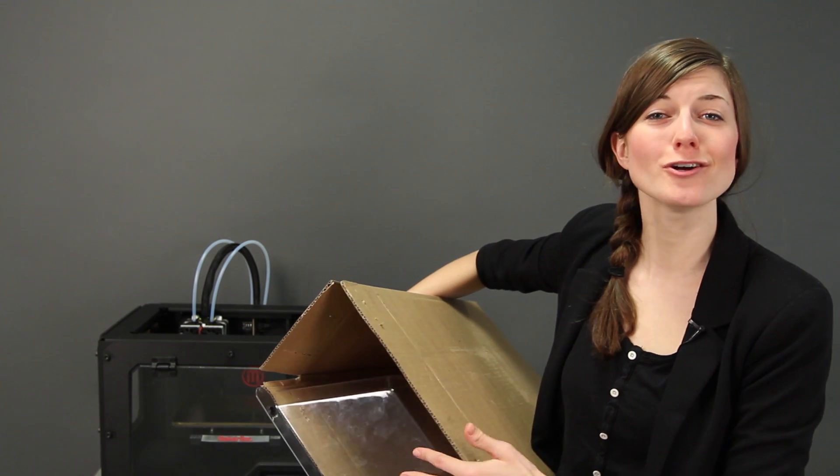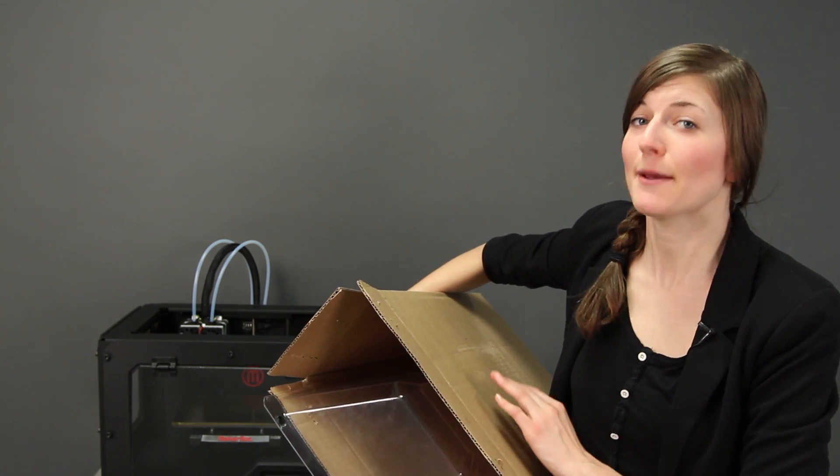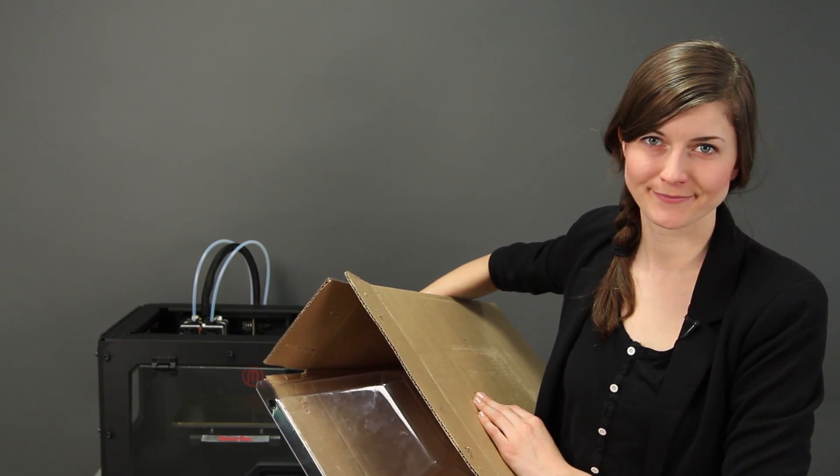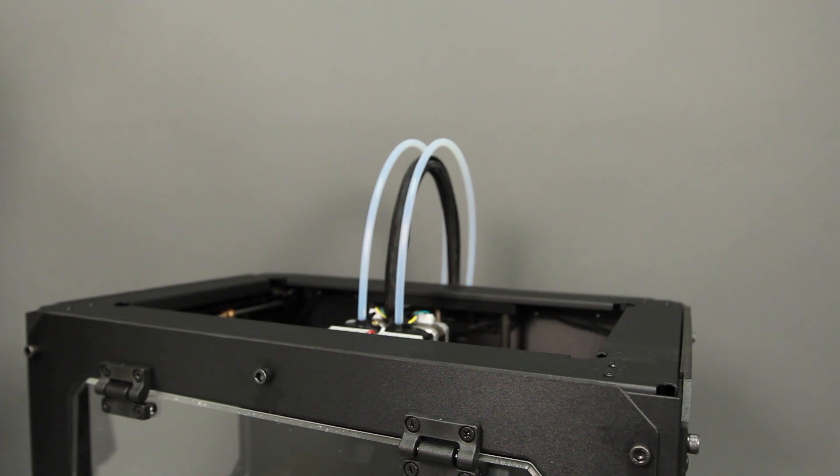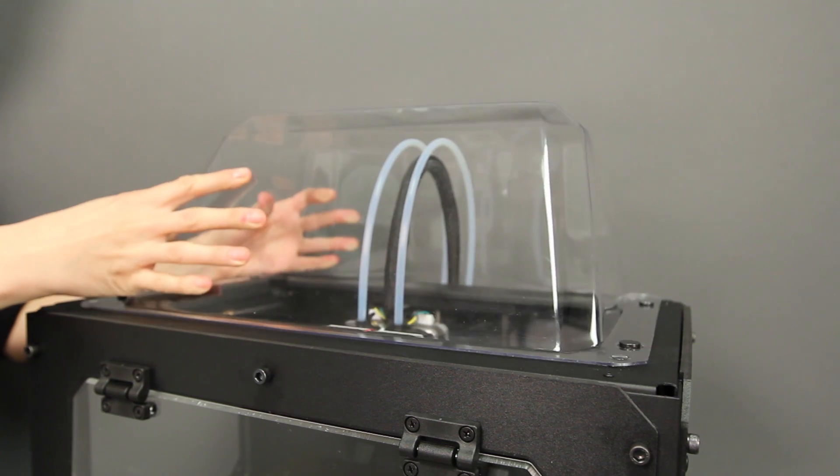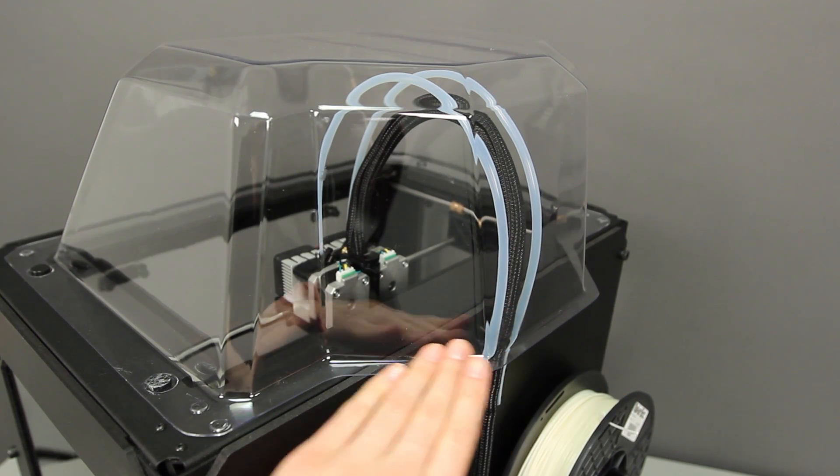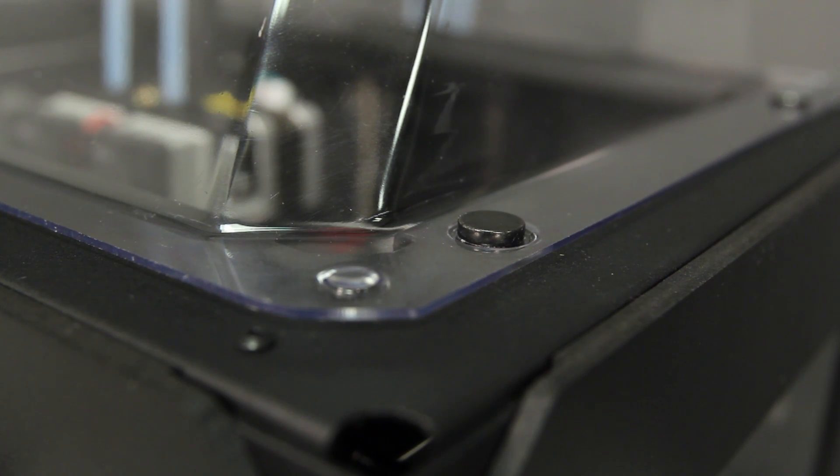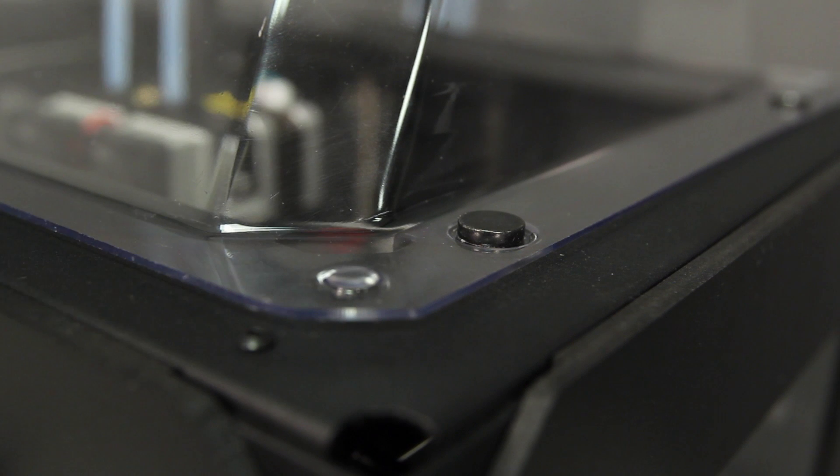Now locate the enclosure lid. The lid ships in a separate box, but it should have arrived at the same time as your MakerBot Replicator 2X. Unpack the enclosure lid and place it over your MakerBot Replicator 2X. The popped out part goes at the back in order to cover the extruder cable and the filament guide tubes. The small magnets at the corners should help hold the enclosure in place.